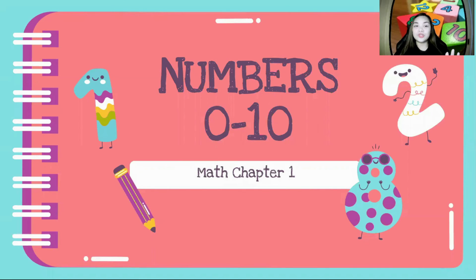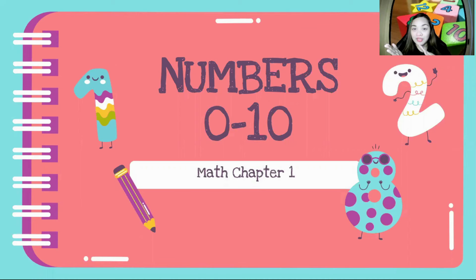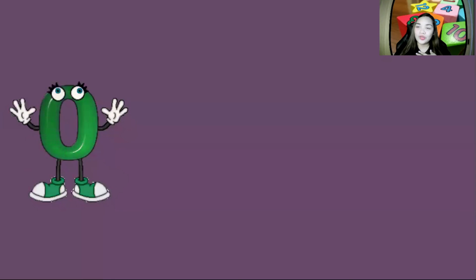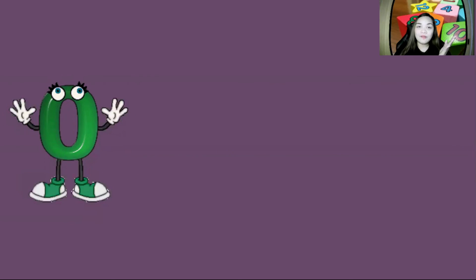Alright, boys and girls, we're going to review your lesson from last time, which is numbers 0 to 10. Teacher is going to show you the number and then you are going to tell me what number it is. Teacher will ask the question — what number is it? or what is it? — and then you're going to say 'it is' and then say the number. Now, what is it? It is 0.